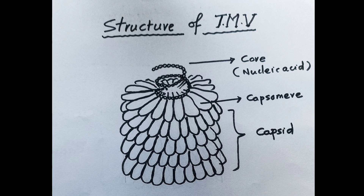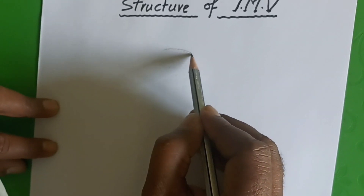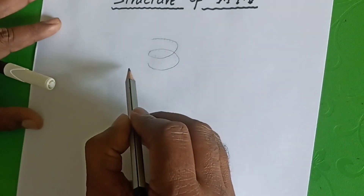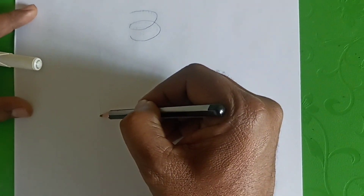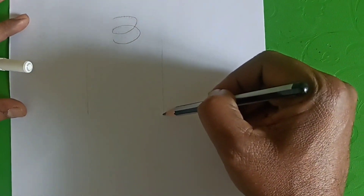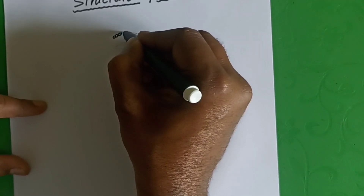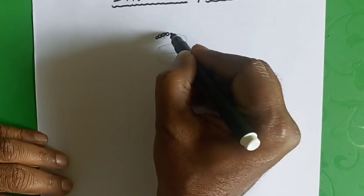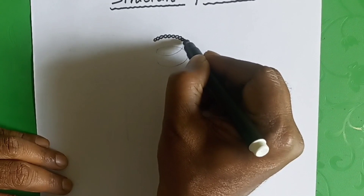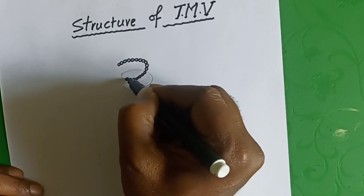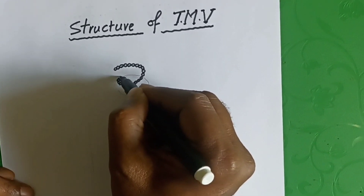Frankel Conrad is the scientist who first explained the structure of TMB. It is a helical virus resembling a long rod shape. It is about 300 nm long and 80 nm in diameter. Generally its molecular weight is 39 into 10 to the power of 6 Daltons, and the central opening along the axis has a 4 nm diameter. It consists of single stranded RNA surrounded by a protein coat called Capsid.